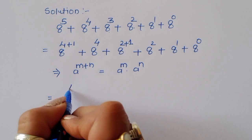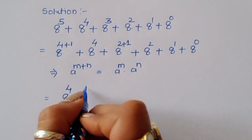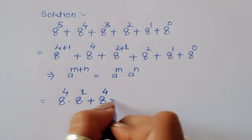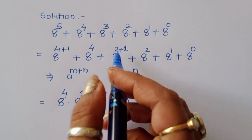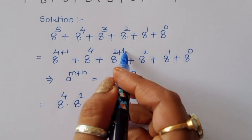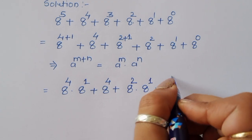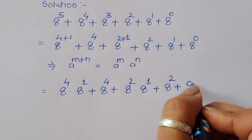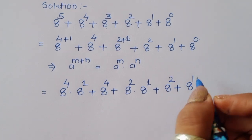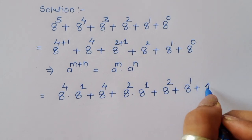Using this formula: 8 power 4 times 8 power 1, plus 8 power 4, plus 8 power 2 times 8 power 1, plus 8 power 2, plus 8 power 1, plus 8 power 0. Note: any number to the power 0 becomes 1, so 8 power 0 is 1.